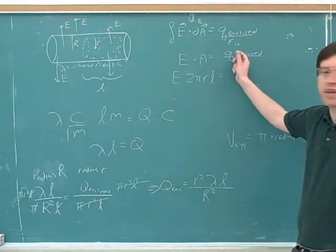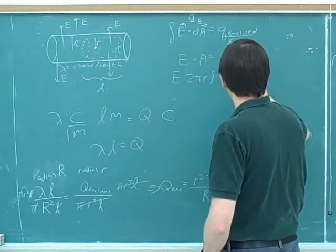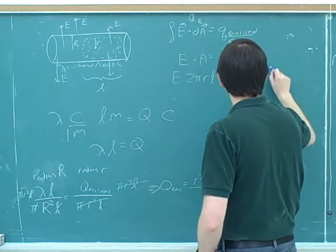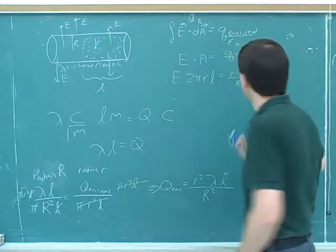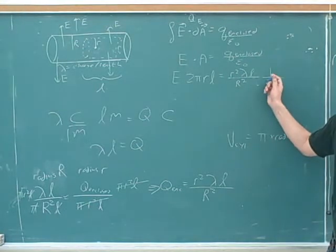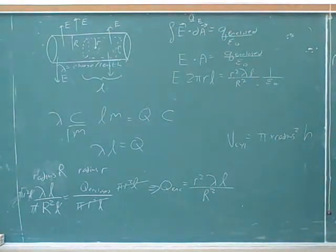All that work here was so that we can get a number for this enclosed charge. And we can simplify this formula. This is really the enclosed charge times 1 over ε₀. That way we can avoid getting a fraction inside the fraction. Now what? So now we solve for the electric field.